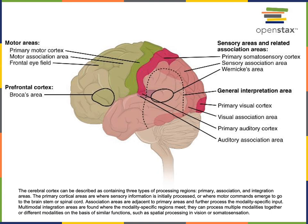In two specific regions of the brain: a region of the left temporal lobe now known as Wernicke's area was associated with impairments of language comprehension. Patients that had damage in a region of the left frontal lobe now known as Broca's area had impairments in speech production. This has led to an understanding of the language network in the brain, which is usually found in the left hemisphere and involves a general interpretation area including Wernicke's area in the left temporal lobe, and a speech production area located in the left frontal lobe including Broca's area.